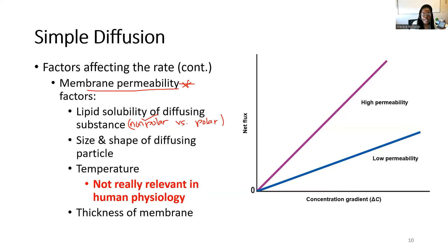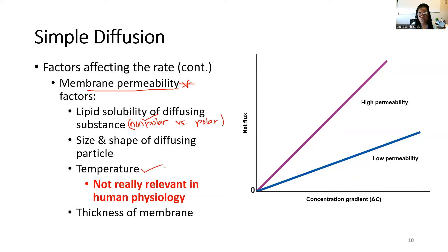Temperature is another factor, though it's not really relevant in human physiology due to homeostasis — our body temperature is kept within a very tight window of control. However, in an experimental setting, such as a beaker or test tube, if you increase the temperature of that solution, you increase the energetic movement of particles, making them more likely to bump into and cross the membrane.